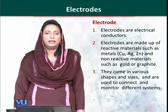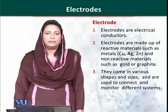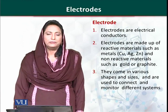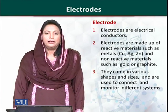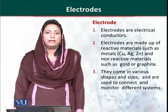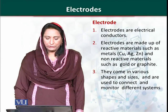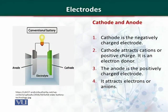Electrodes monitor and control a number of systems. On the basis of charge, we can divide electrodes into two types: one is anode and the other is cathode.